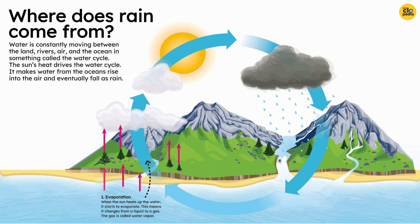1. Evaporation. When the sun heats up the water, it starts to evaporate. This means it changes from a liquid to a gas. The gas is called water vapor.